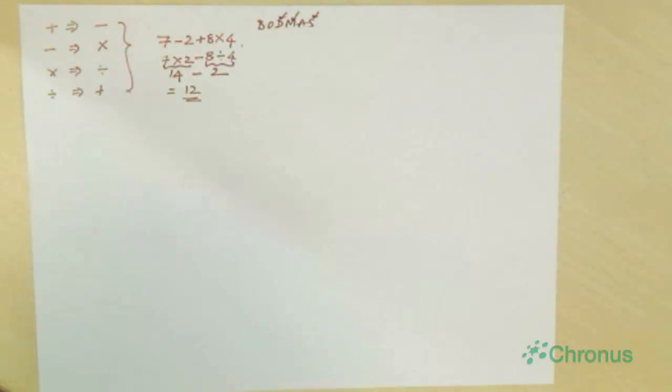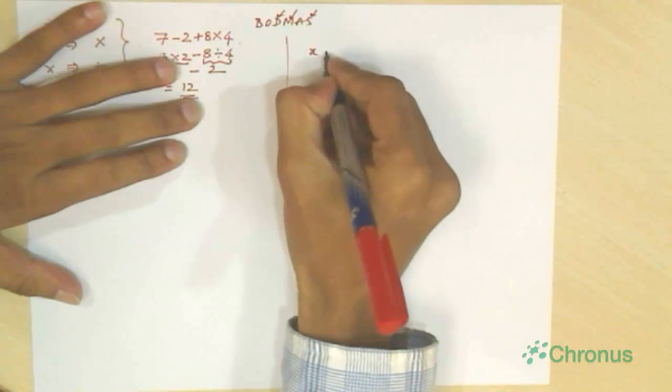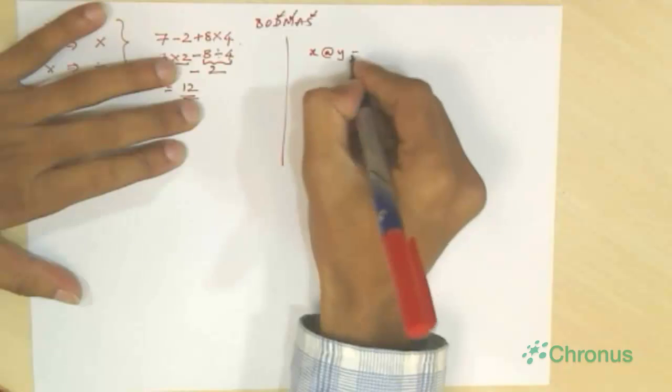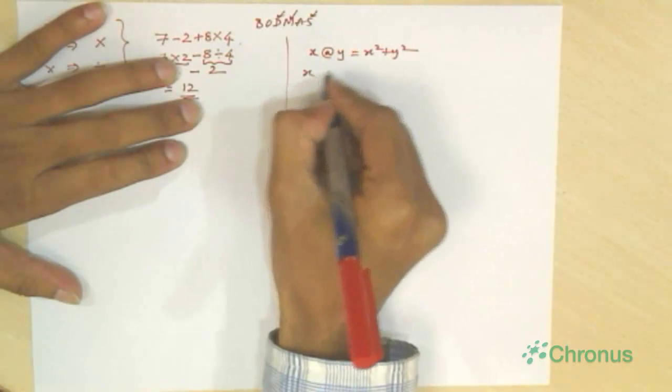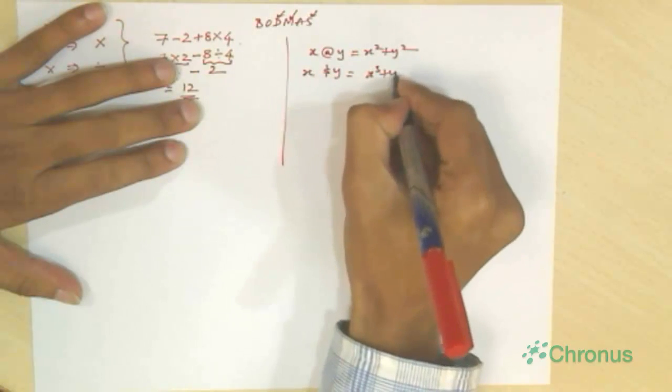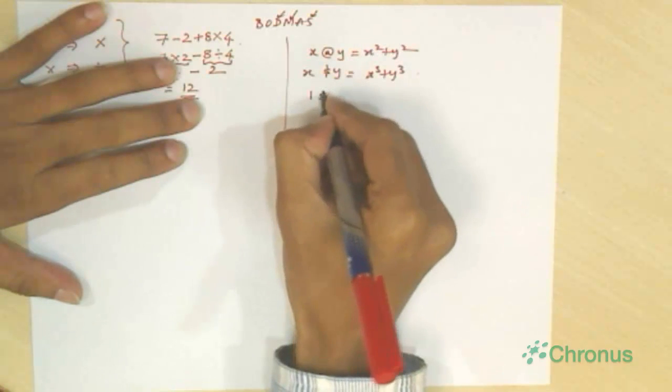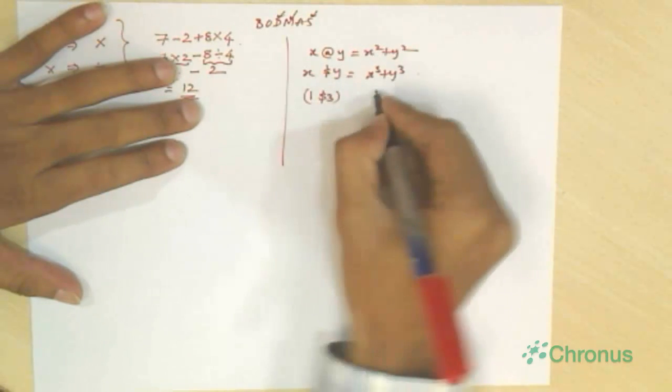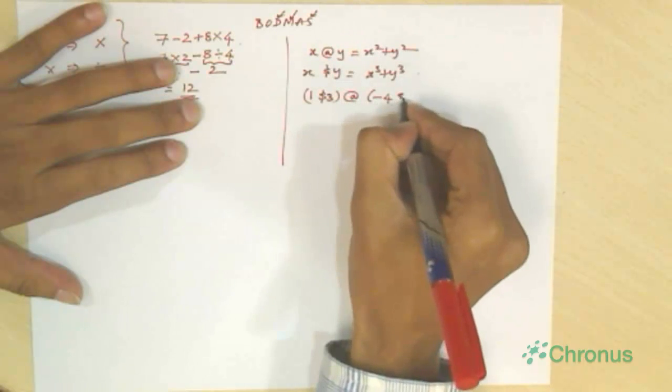And another kind of problem which we can have is, say, something like this. If x at y is equal to x square plus y square. If x dollar y is equal to x cube plus y cube, then what is the value of 1 dollar 3 at minus 4 dollar 5?